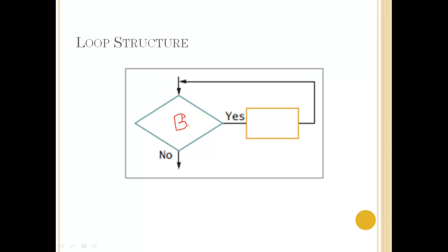If decision B evaluates to yes, the flow goes to process C, and then back to the decision again to ask the question — to do the evaluation to determine: do we continue with the loop, do another iteration, or do we exit the loop? So that's a basic loop structure explained.